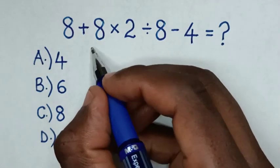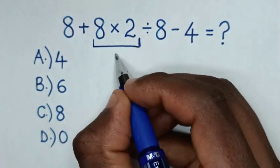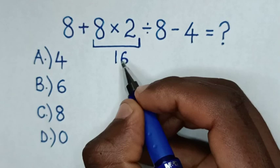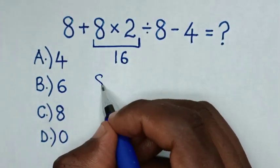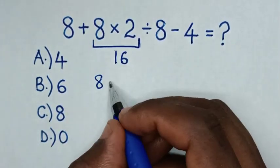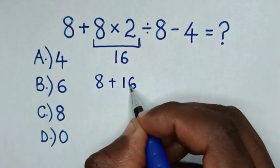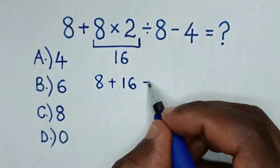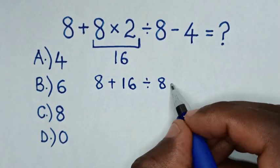So first, we start with the multiplication: 8 times 2 is 16. Then it will be 8 plus 16 divided by 8 minus 4.